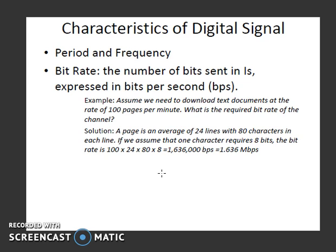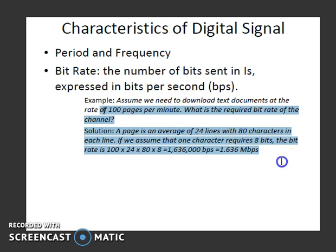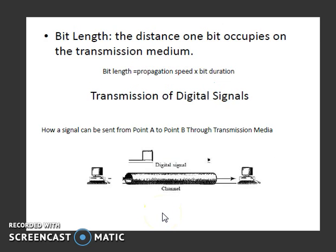Now if we see the characteristics of a digital signal — we have seen period and frequency in analog signals. Here we have bit rate, which is the number of bits sent in one second, expressed in bits per second (bps). Here is an example you may please go through. Coming to bit length, it is the distance one bit occupies on a transmission medium, and that is equal to propagation speed multiplied by bit duration. These are the basic characteristics of a digital signal.